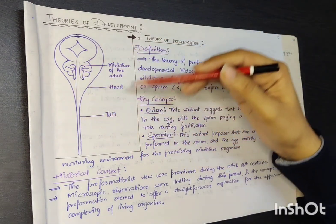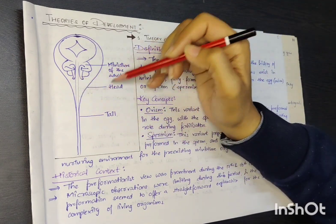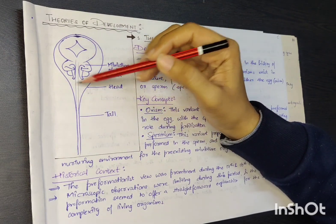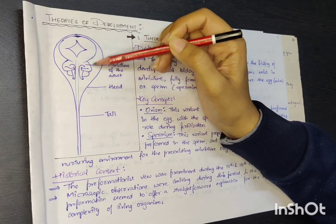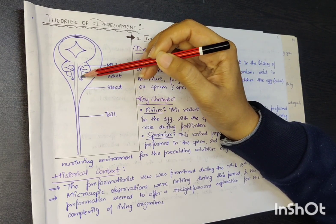In this diagram, here we can look at spermism. In this sperm cell, where this part is the head and this part is the tail region, the head region consists of a miniature version of an adult. Here we can look at its head, its hands, and legs.